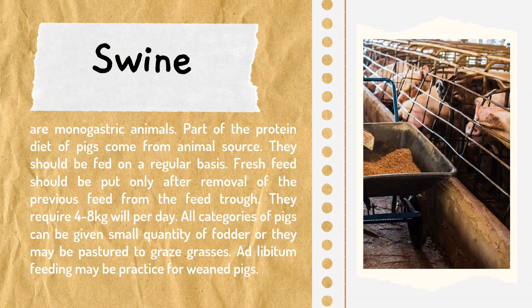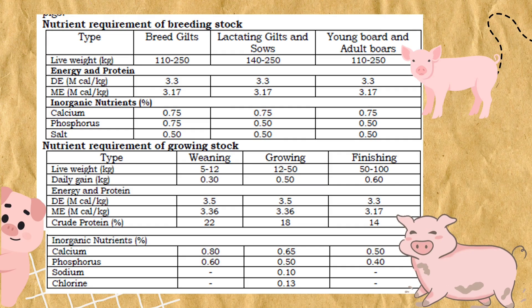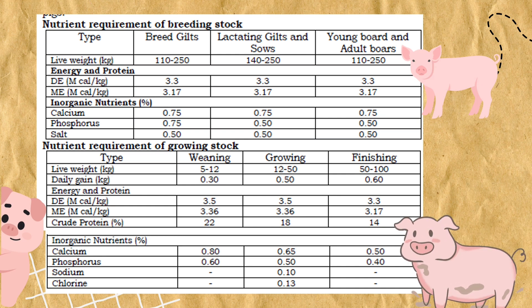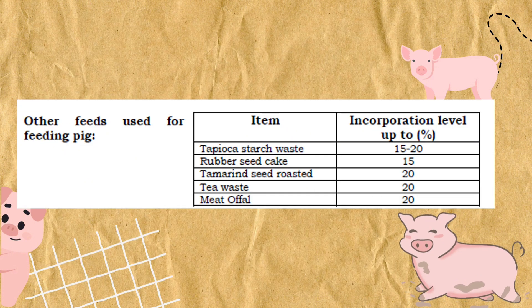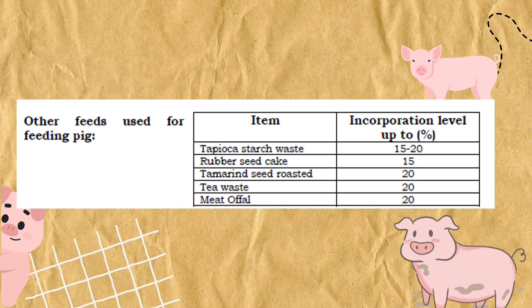Pigs should be fed on a regular basis. Fresh feed should be put in only after removal of the previous feed from the feed trough. This table shows the nutrient requirement of breeding stock, the nutrient requirement of growing stock, and other feeds used for feeding pigs.